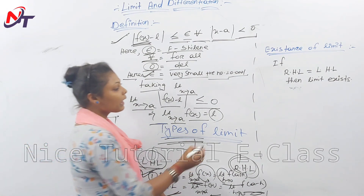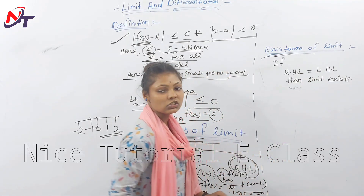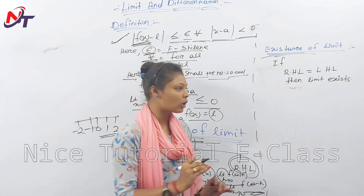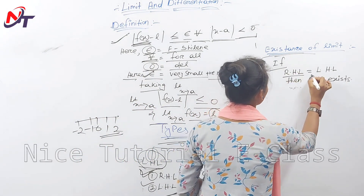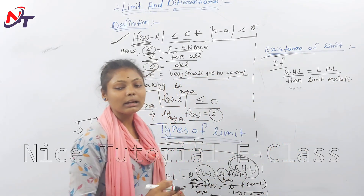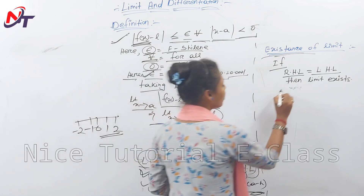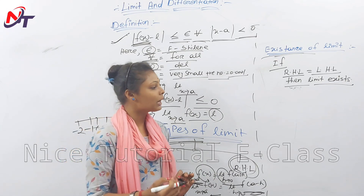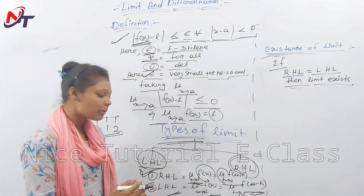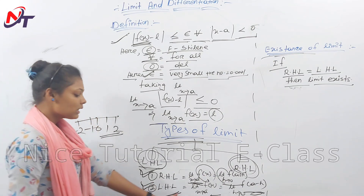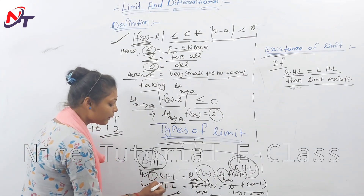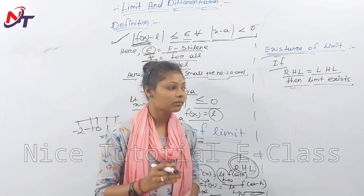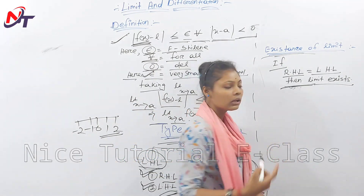If the right-hand limit equals the left-hand limit — that is, RHL = LHL — then the limit exists. The right-hand limit and left-hand limit formulas are used to identify whether the limit of a function exists.